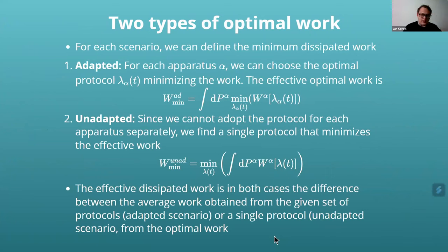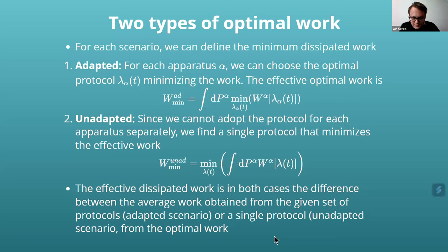For the adapted scenario, for each apparatus we can choose the optimal protocol that minimizes the work, then average. For the unadapted scenario, we cannot do that — we have to use a single protocol. The difference between these two gives us what is the extra dissipated work due to this lack of knowledge of the apparatus.